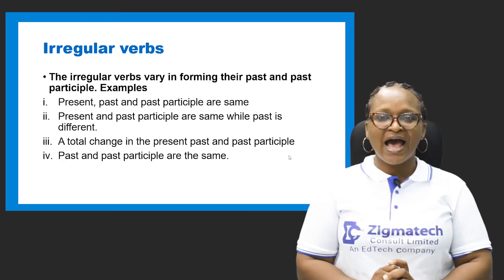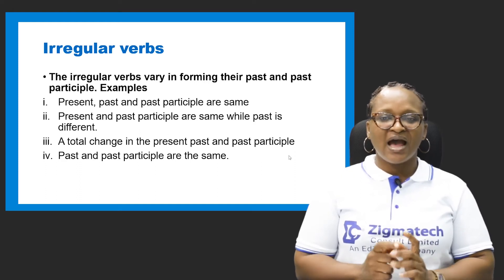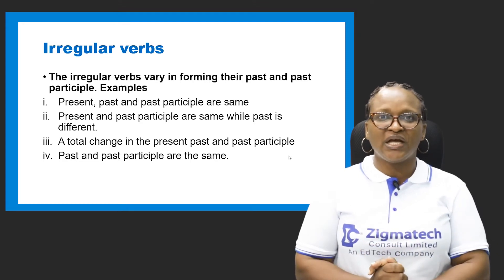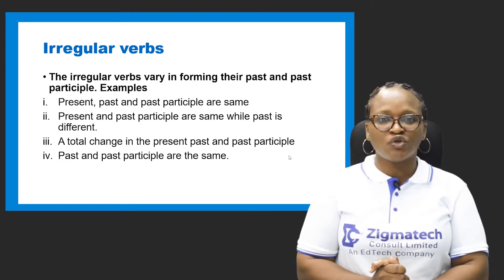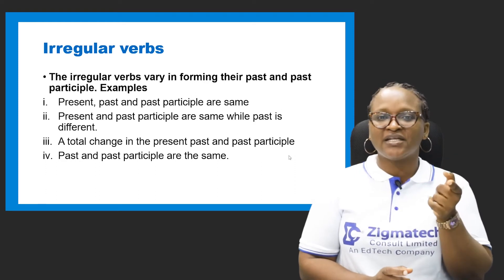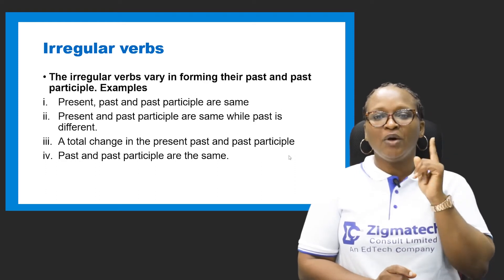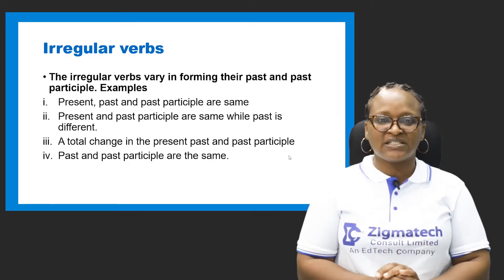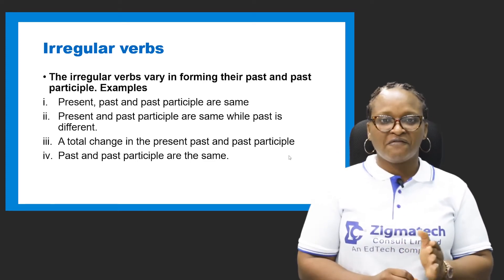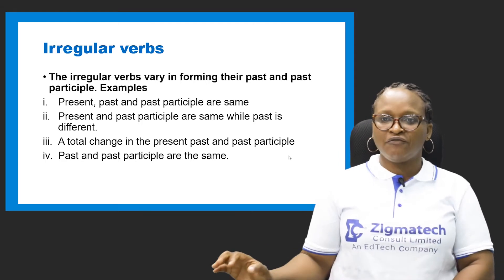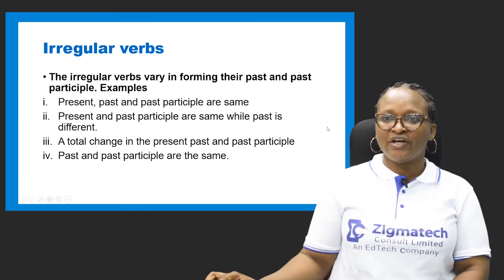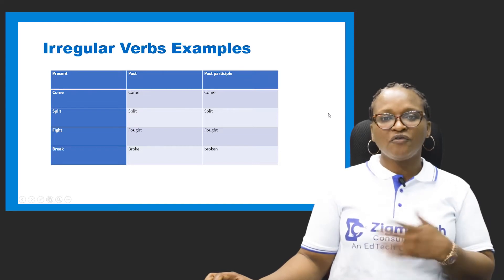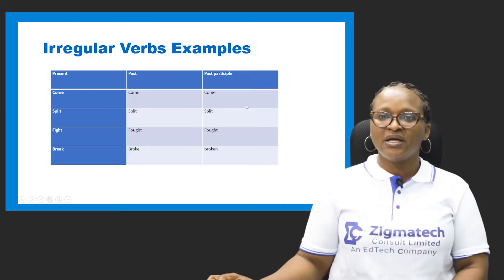Finally, we have where the past and past participle are the same. The word 'fight' comes to mind. Fight has the past and the past participle as 'fought': fight, fought, fought. Remember, we are looking at the forms of verbs, and one form we have taken is the irregular verb.